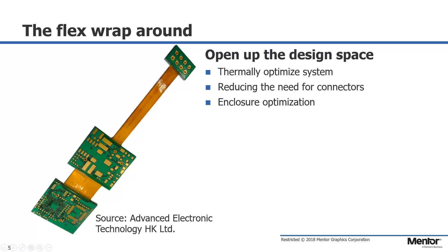Reducing the need for cable harnesses and connectors can reduce overall system costs and assembly time, while simultaneously allowing for the free movement of air to optimize cooling. Another strategy is orienting the PCB to maximize airflow or get circuits into tight spaces. The enclosure can be optimized in parallel with the PCB.